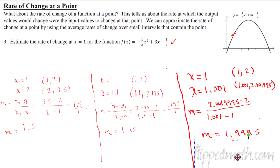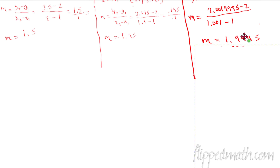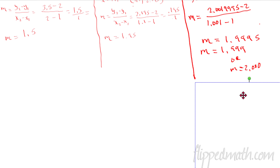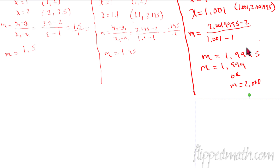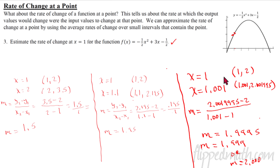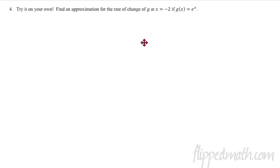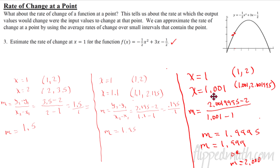The slope comes out to approximately 1.9995. When rounding to three decimal places, look at the fourth decimal — it's 5 or higher, so round up. Nine rounds up to ten, carry over — you get 2.000. Alternatively, you can truncate and get 1.999. Either option is acceptable to the nearest thousandth. So the estimated rate of change at x equals 1 is either 1.999 or 2.000.